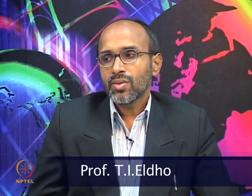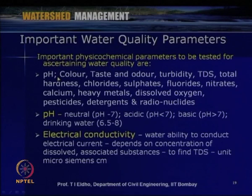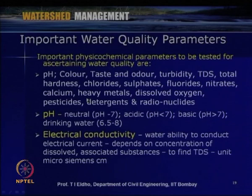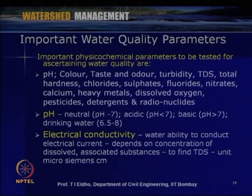Important physicochemical parameters generally tested to assess suitability of water for specified use include: pH (indicating whether water is acidic or alkaline), color, taste and odor, turbidity, TDS (total dissolved solutes), total hardness, chlorides, sulphates, fluorides, nitrates, calcium, heavy metals, dissolved oxygen, pesticides, detergents, and radionuclides. By testing these parameters we can specify whether the particular source of water is suitable for drinking, irrigation, or industrial purposes.